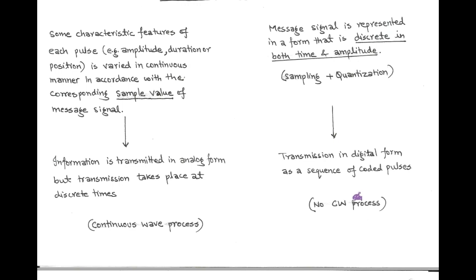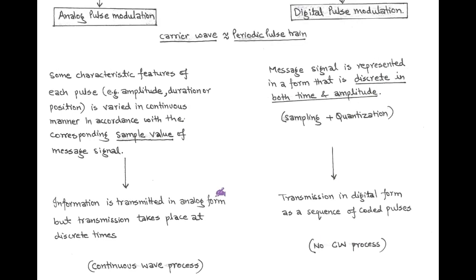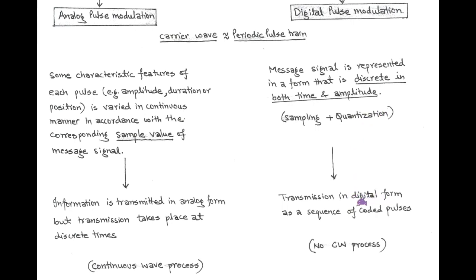The main difference between analog pulse and digital pulse modulation is that in analog pulse modulation, there is only a sampling process for discrete time. But in digital pulse modulation, there is both sampling and quantization process in order to get digital information — that is called digital communication.